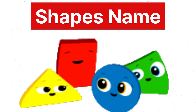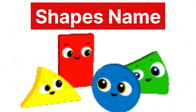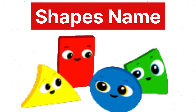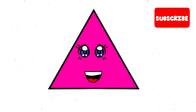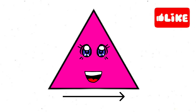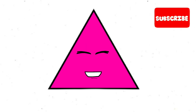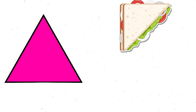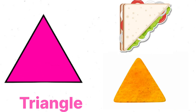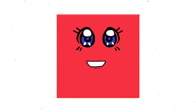Hello kids, today we will know about shapes, so let's start! Hi, I am Triangle and I have three sides: one, two, three. The example of triangle is sandwich and chips.